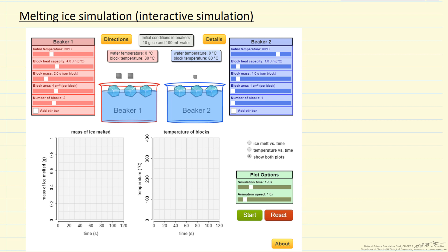In this simulation, we're looking at two beakers, both of which contain 10 grams of ice and 100 grams of water. And what we're going to do is drop metal blocks into each beaker.